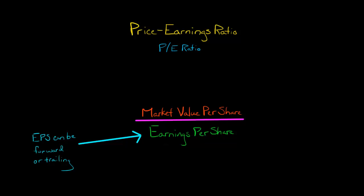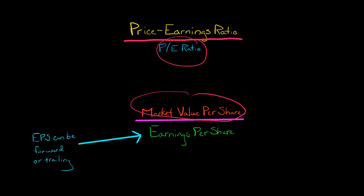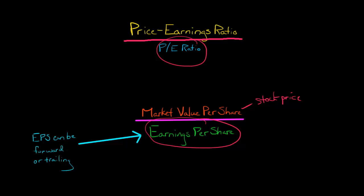In this video, we're going to discuss the price-to-earnings ratio, which is also known as the P/E ratio, or the price-to-earnings multiple. You calculate the P/E ratio by dividing a company's market value per share — which, if it's a publicly traded company, is just the company's stock price — by the company's earnings per share.